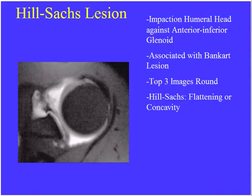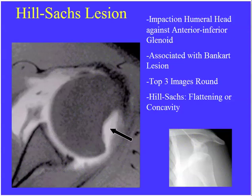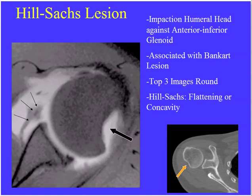They also like to show the Hill-Sachs lesion in the axial plane. The upper three cuts of the humeral head should be perfectly round — no concavity or flattening of the posterior aspect. With anterior dislocation, the humeral head impacts against the undersurface of the glenoid, resulting in a concavity seen in the upper three axial images. Whether on MR or CT, any flattening in one of the upper three images represents a Hill-Sachs lesion associated with anterior dislocation.